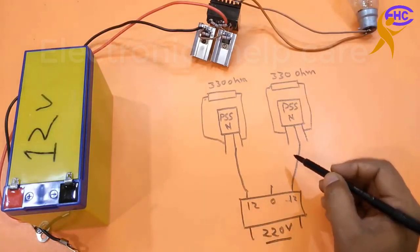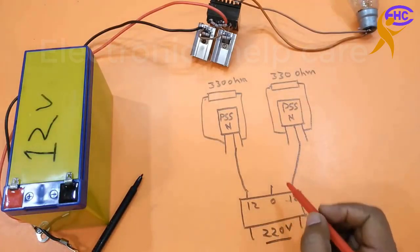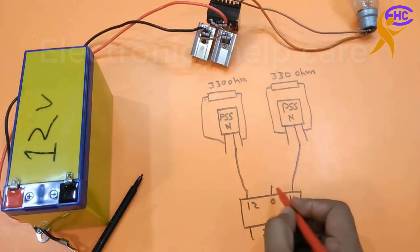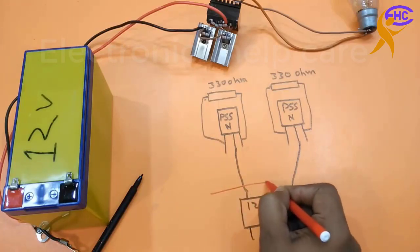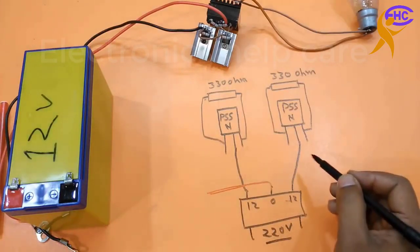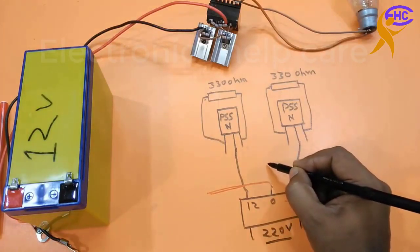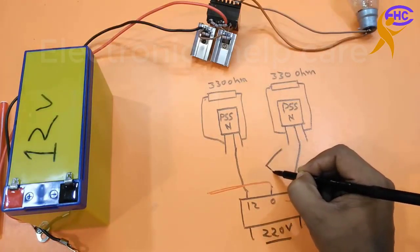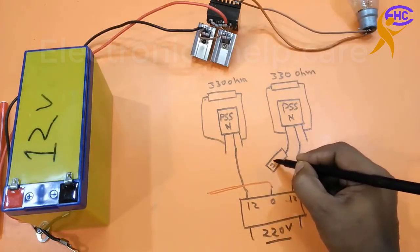The drain leg goes to direct 12 voltage. The MOSFET drain leg goes to direct 12 voltage. The middle of the transformer will be the positive voltage. Zero is the positive voltage, and 12 goes to the drain leg.